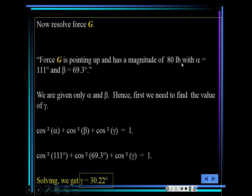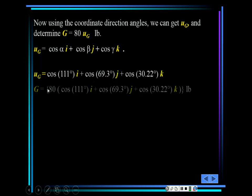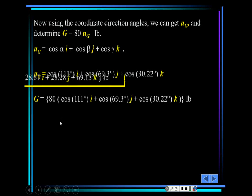Always remember the angle must be smaller than 180. Since we now have alpha, beta, gamma, and the magnitude, we apply: magnitude × (cos(alpha)·i + cos(beta)·j + cos(gamma)·k). So G = 80 times the unit vector in the direction of G, which is cos(alpha)·i + cos(beta)·j + cos(gamma)·k. Multiply by the magnitude and you get G.